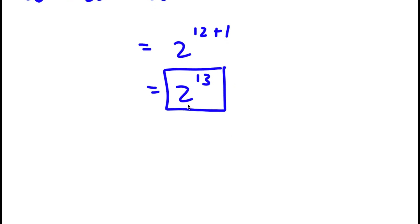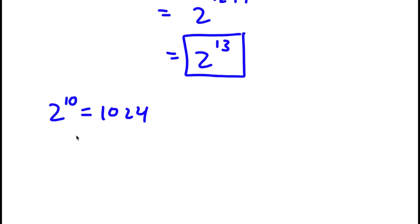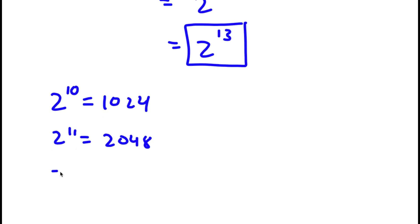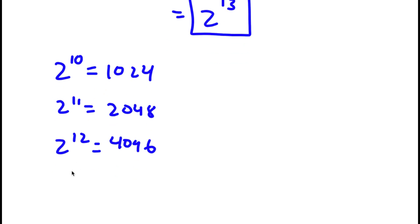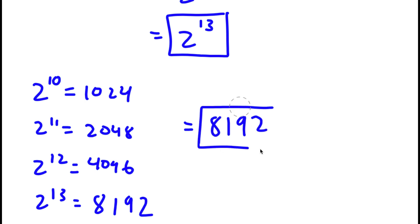Now I'm going to simplify it. We know that 2 to the power of 10 is equal to 1,024. So 2 to the power of 11 is double of 1,024, which is 2,048. And 2 to the power of 12 is double of 2,048, which is 4,096. So 2 to the power of 13 is going to be double of 4,096, which is 8,192. So 8,192 is my answer.